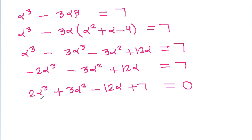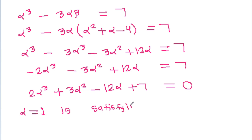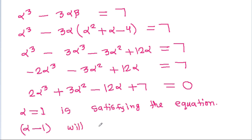If we put α=1, then 2+3-12+7=0, which equals 0. That means α=1 satisfies the equation, so (α-1) will be a factor.